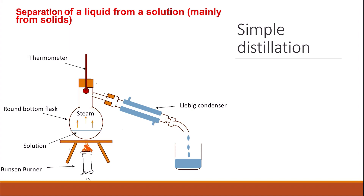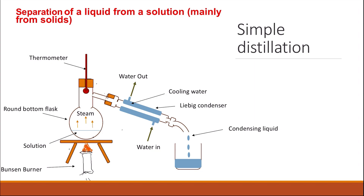The gases, steam, or vapors that are formed will pass through a Liebig condenser. The Liebig condenser contains cooling water, where the water goes in from the bottom and goes out from the top. The vapors that go through the condenser will start to condense, and the condensing liquid is collected in a receiving flask. So we can collect the distilled liquid in the receiving flask, and the solid will remain in the round-bottom flask.